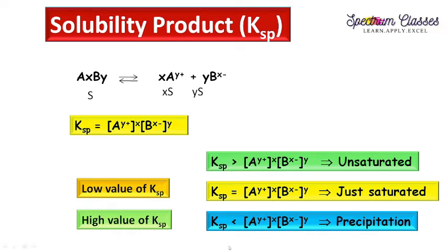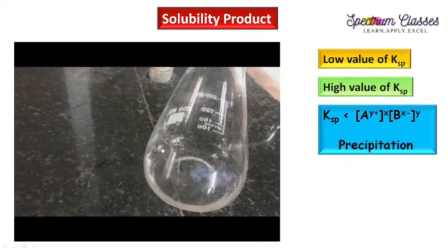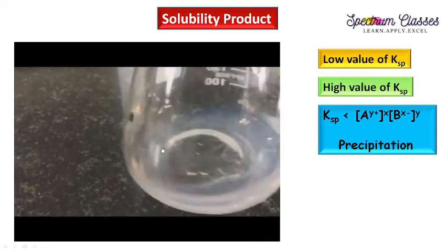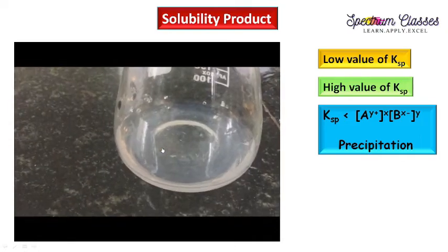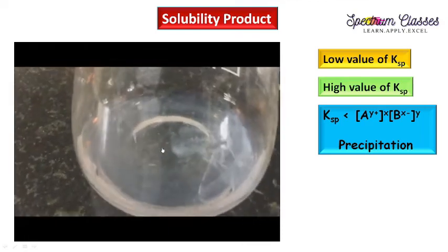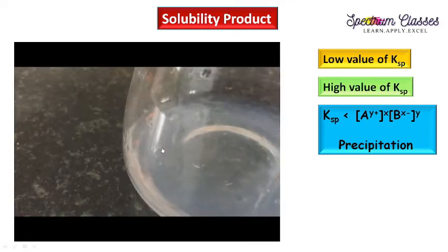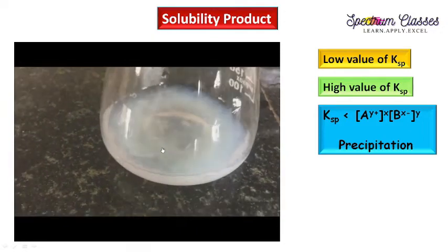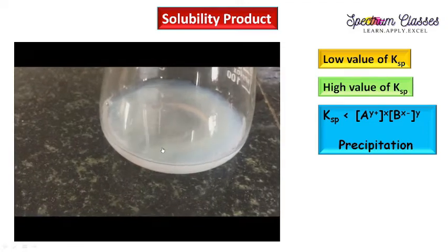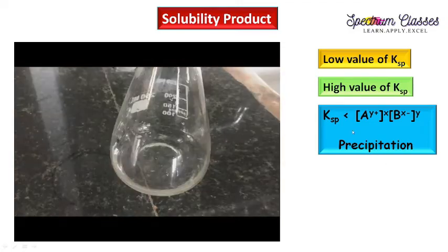I am showing you a lab activity. This is an NaCl solution. I have added AgNO3 to this solution — here you can see no precipitation occurs. Now I have added more AgNO3 and still no precipitation occurs. Now I am adding some more AgNO3 to this solution, and here you can see precipitation occurs.